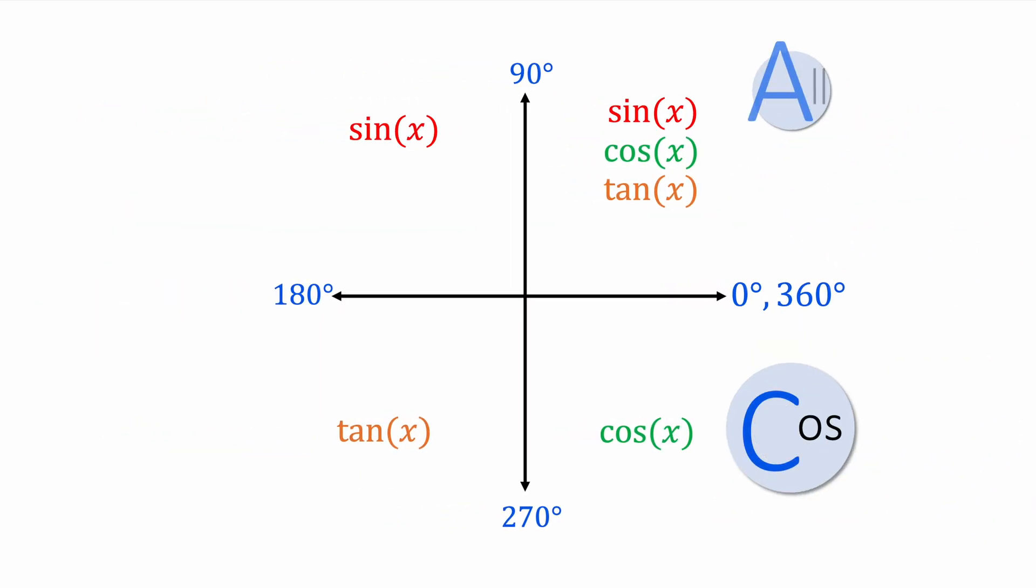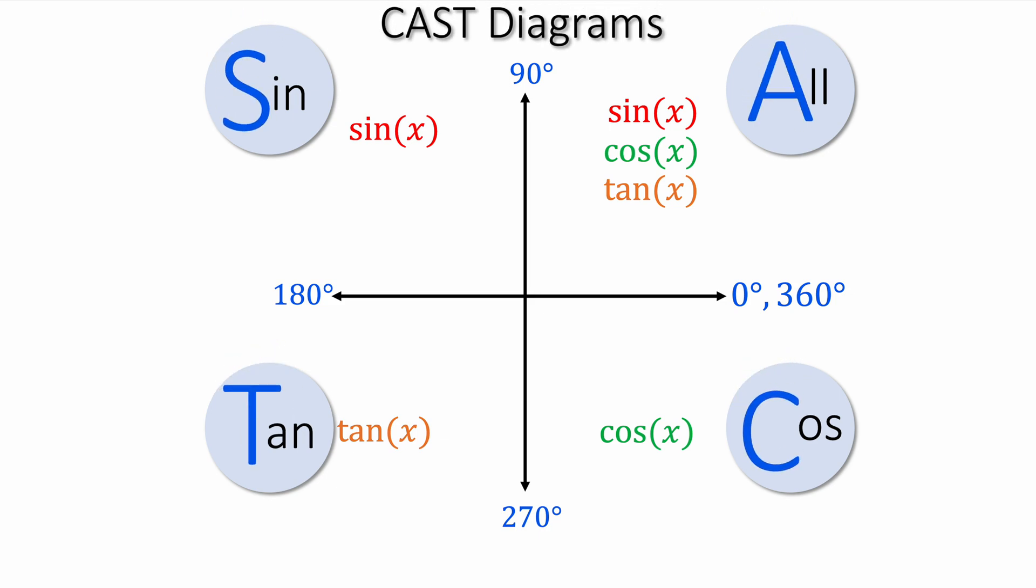We have the cos graph in the bottom right, we have all in the top right, sin in the top left, and tan in the bottom left. C-A-S-T. And this is how I remember the order of the four quadrants. Three graphs in four quadrants: Cos, All, Sin, Tan. C-A-S-T. And all three are positive between 0 and 90.